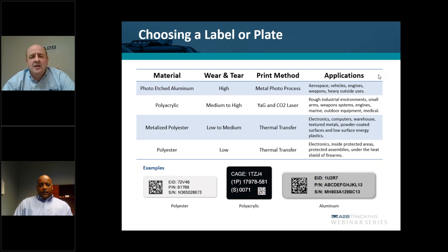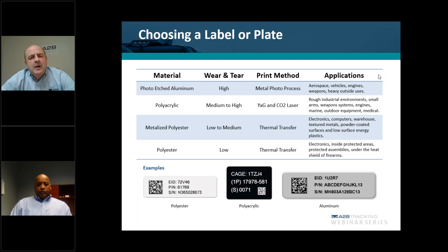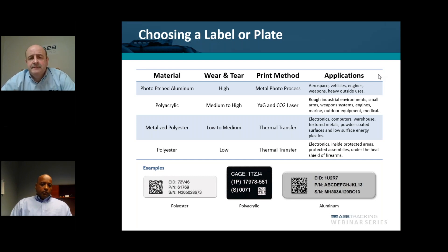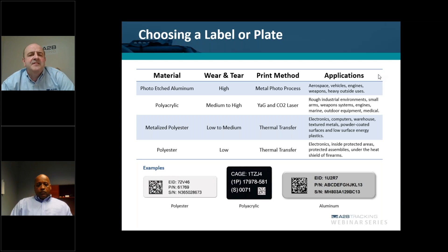Once you've got the data set, the next part is to choose a type of material and printing method that's conducive to the environmental conditions the labels will be exposed to. It's very important to know whether the asset will be indoors, outdoors with UV ray exposure, exposed to harsh chemicals, extreme temperatures, or thermal shock. These are all characteristics to consider when determining the proper material and marking method. As mentioned earlier, this label is meant to last for the entire life cycle of the asset being marked, so not only is the material important — the print method and marking method are just as important.